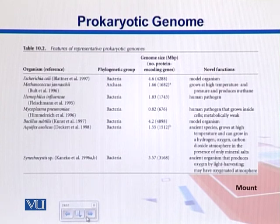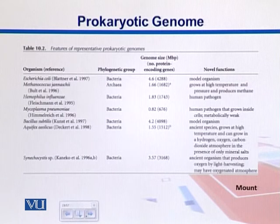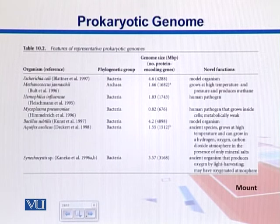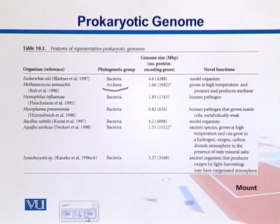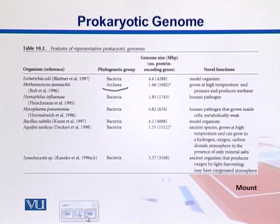In this diagram we see different representative prokaryotic organisms and their genomes. E. coli, sequenced by Blattner et al., has a genome size of 4.6 MB. We can see its phylogenetic group — it is a bacterium. In this set we have just one archaeon and the rest are bacteria. The number of protein-coding sequences is given in parentheses — there were 4,000 genes in E. coli.